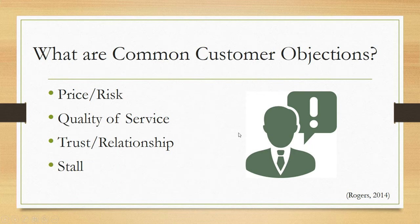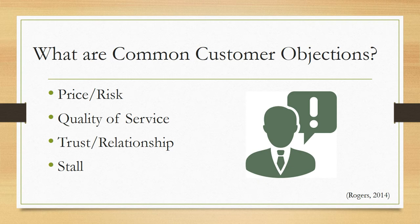So what are some common customer objections? While there can be many reasons why a person may not want to buy, there are four common ones. First would be price or risk. The price can obviously be an objection for many people because sometimes the price is a risk — they may not be able to afford it or it may not be in the budget.